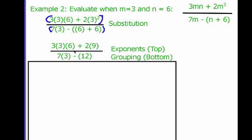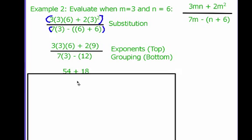Now going through, up top I don't have any more exponents. I've done my exponents, so I'm going to do my multiplying. I've got 3 times 3 times 6. 3 times 3 is 9. 9 times 6 is 54.